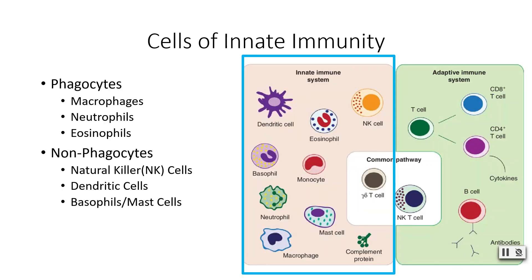We will discuss innate immunity. The cells involved in your innate immunity include phagocytes like macrophages, neutrophils, and eosinophils. We also have non-phagocytic cells including natural killer cells, dendritic cells, basophils, and mast cells. Remember this is our nonspecific immunity, so regardless of what pathogen we might come into contact with, the response by these cells will be the same every time.